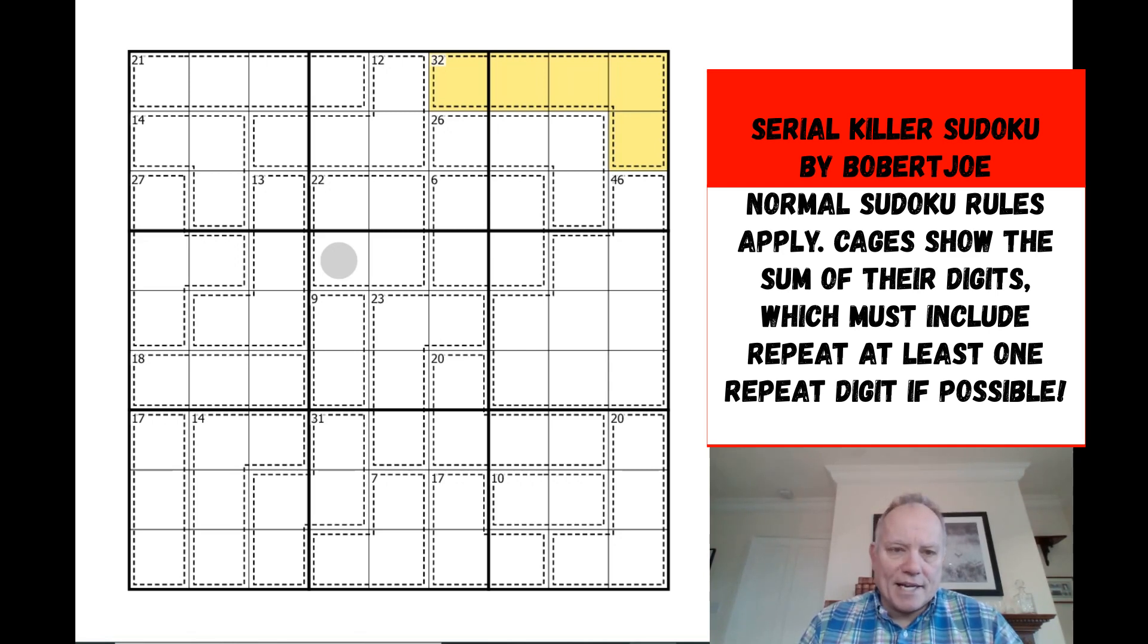Not only can digits repeat in cages in this puzzle, they must if they can. So for any cage that's not confined within one row, column, or box, and there are a few that are confined and they can't contain repeats, any cage that can have a repeated digit within normal Sudoku rules does have at least one.